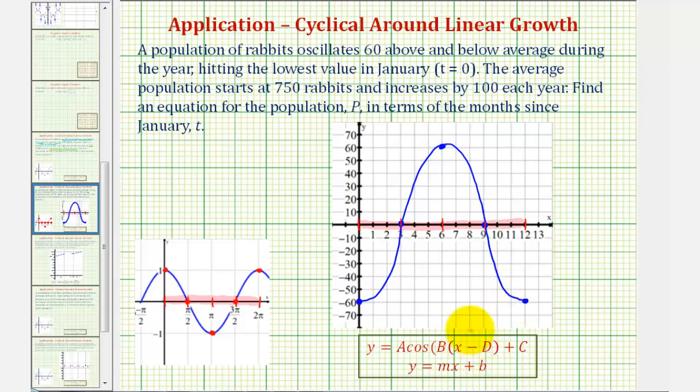So now let's find the equation of this trig part of our equation. Remember the absolute value of a is the amplitude. So our amplitude is 60, but because we have a reflection across the x-axis, that means a would be equal to negative 60.